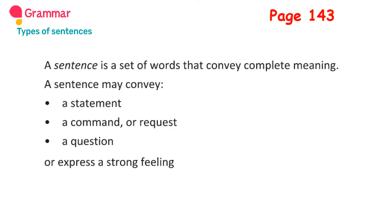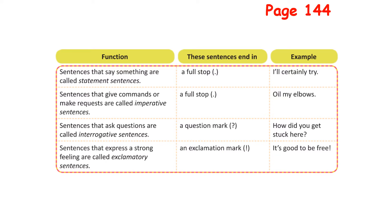You have already learned this in class 3 as well as class 4. Open your course book to page 144. There is a tabular column showing the functions of each sentence type, how they end, and one example each. Sentences that say something are called statement sentences — they end with a full stop. Example: 'I'll certainly try.'